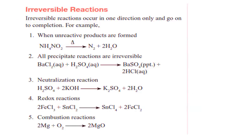Irreversible reactions occur in one direction only — you keep moving forward, you can't go back. They occur only in one direction, going towards completion. For example, when unreactive products are formed, as in the case of the decomposition of ammonium nitrous, giving ammonia gas and water. Also, all precipitation reactions are irreversible, like the reaction between barium chloride and tetrasulfate, giving barium precipitate and hydrochloric acid.